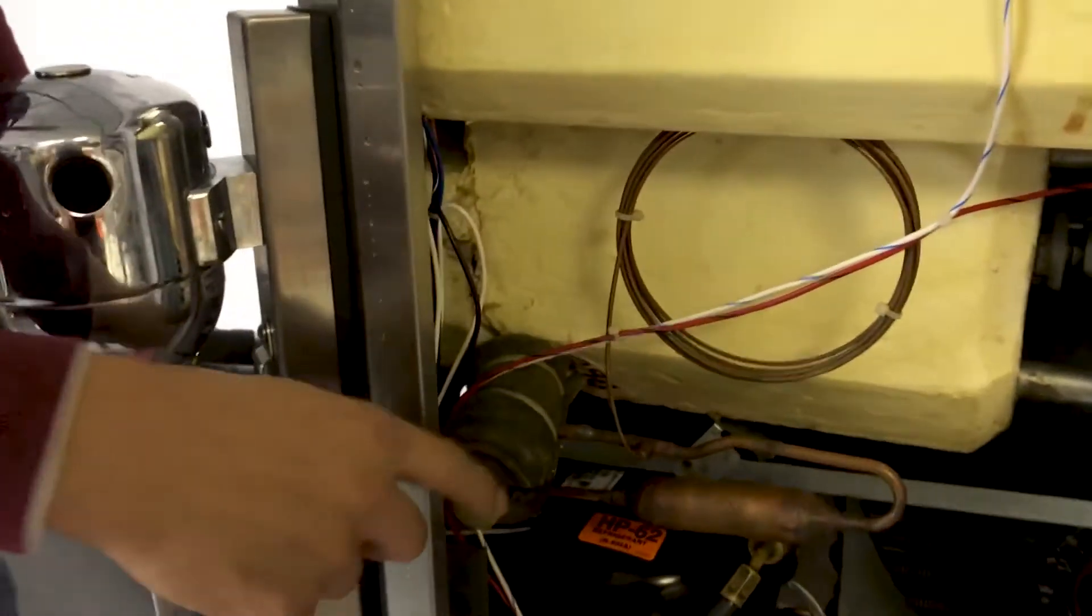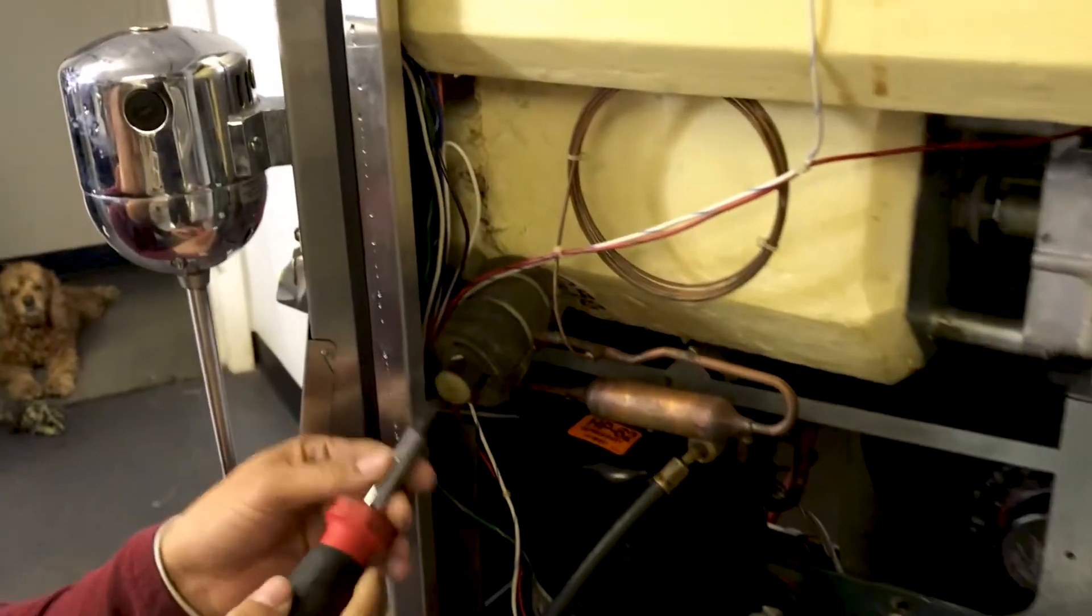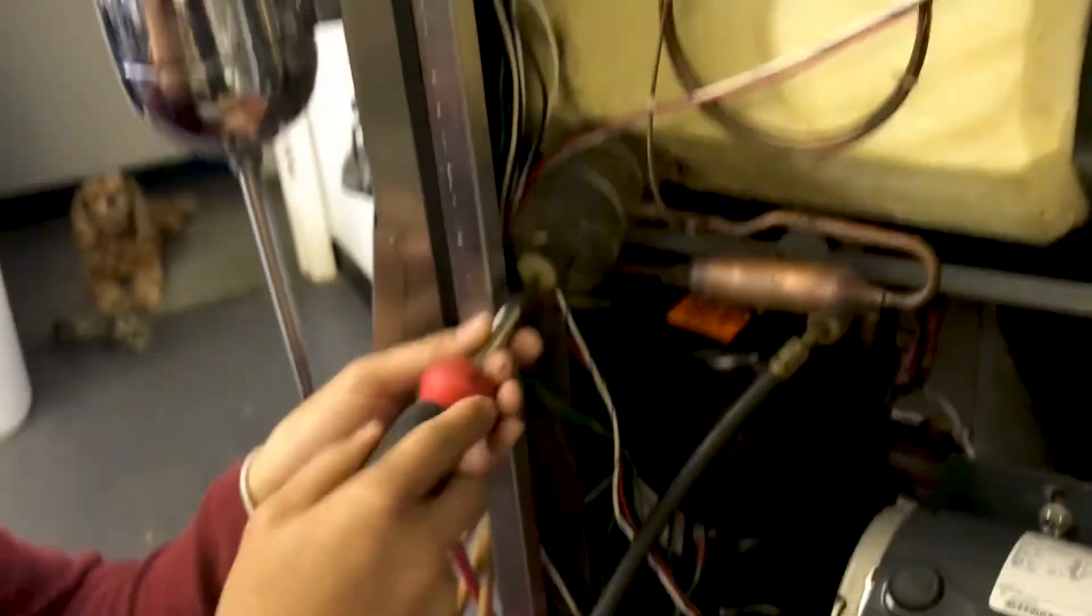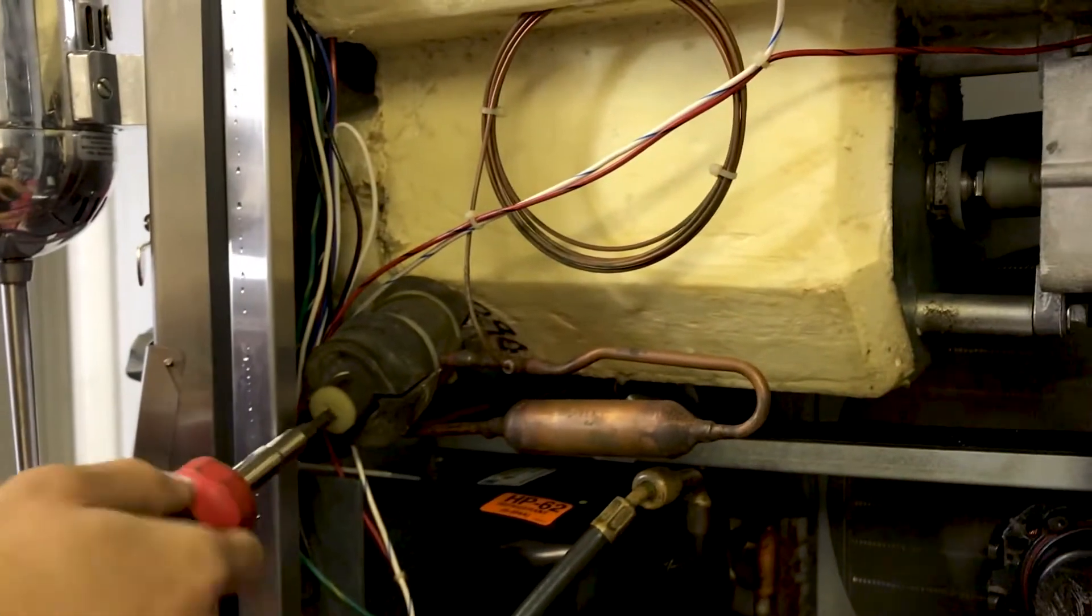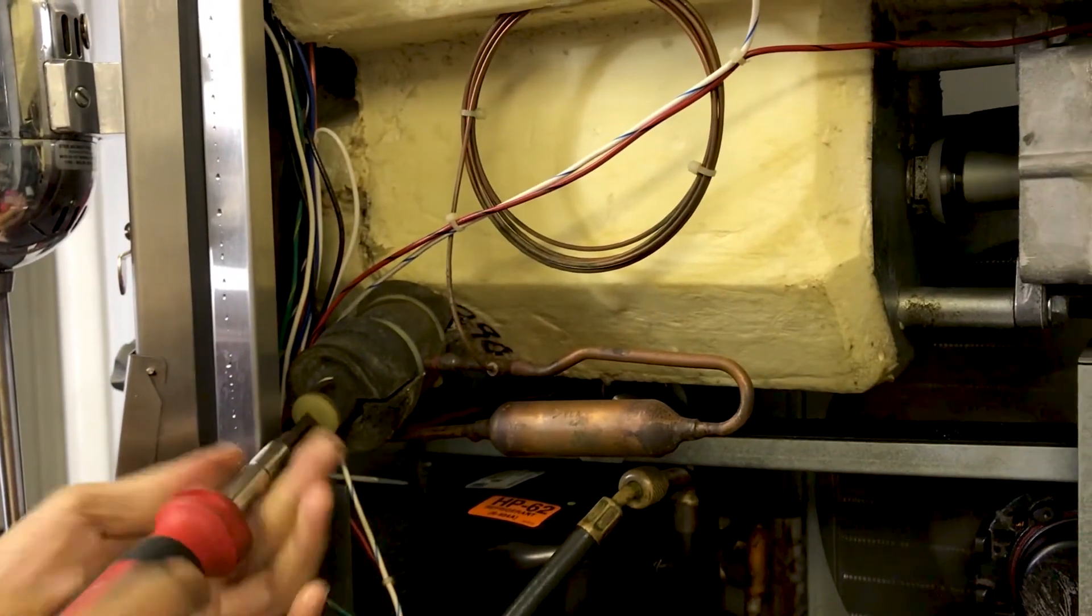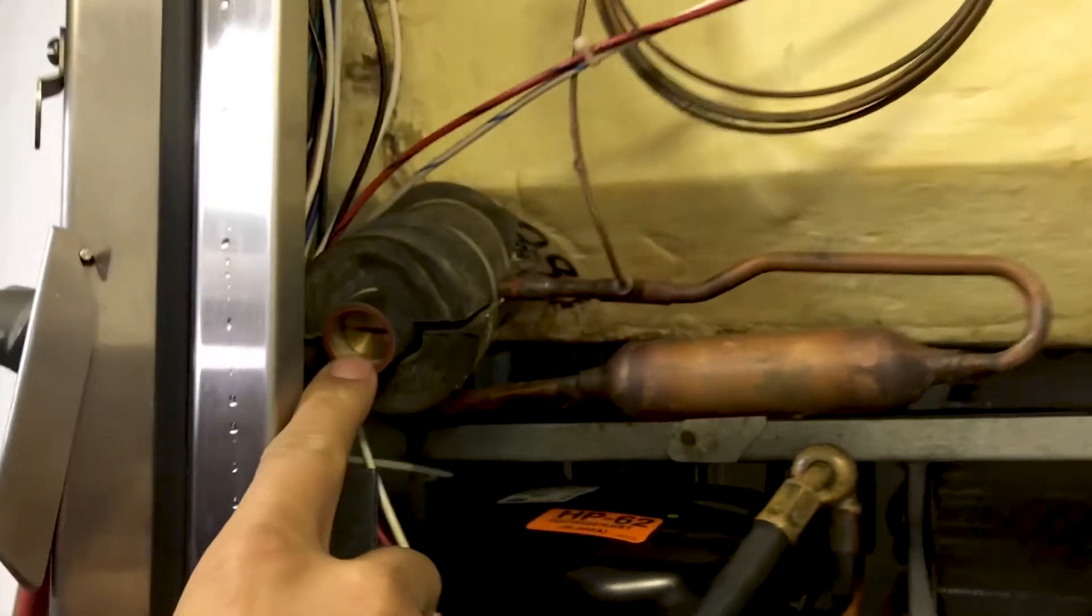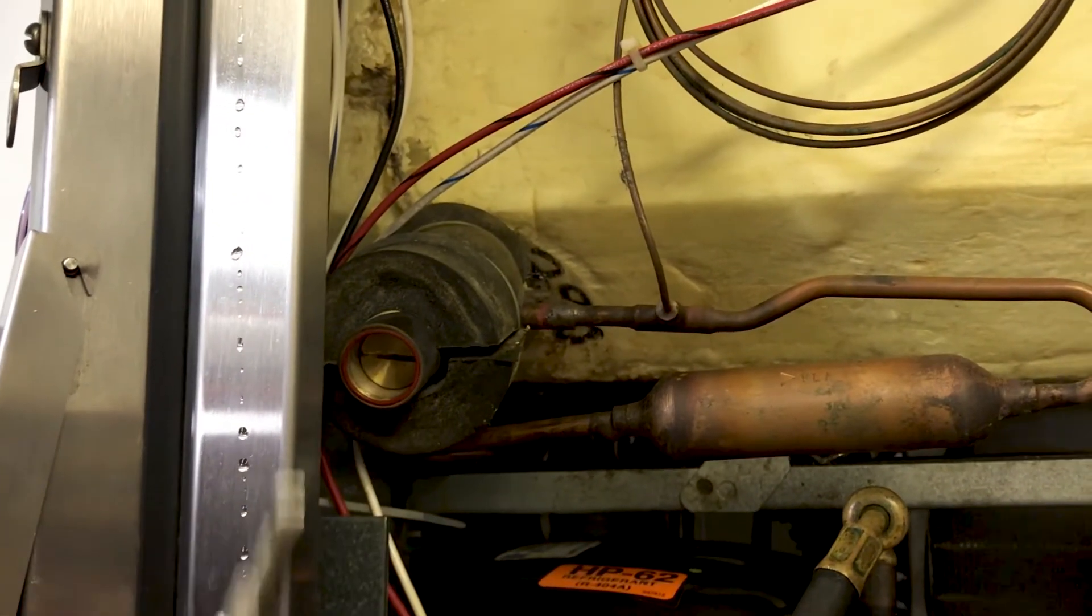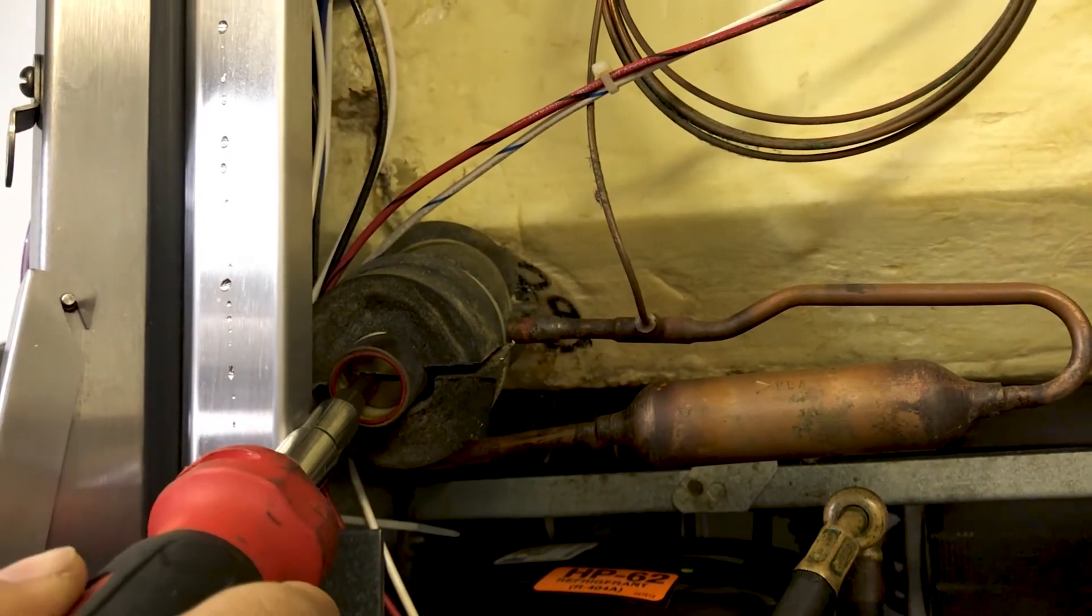So to adjust the valve, you need a flathead screwdriver. You start by removing the plastic cover. And from here, you're going to see the adjustment right here, which is basically a little slit. And you're going to put your flat head in there, and it only adjusts clockwise or counterclockwise.